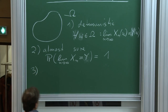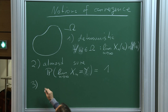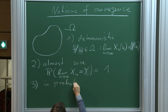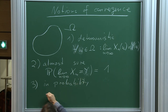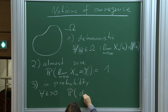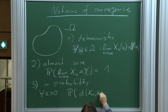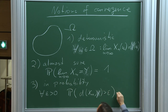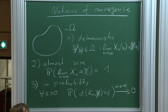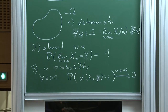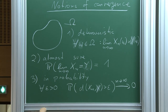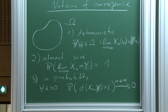The third notion I would like to discuss is convergence in probability. That is, of course, that the probability that the distance between x_n and y is larger than epsilon goes to 0 as n tends to infinity. I will need a little bit of space because I would like to say more about convergence in probability later. The fourth notion is convergence in distribution.